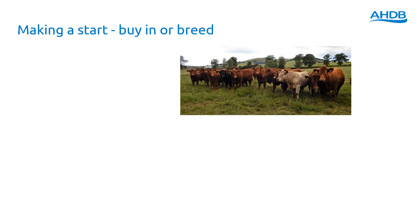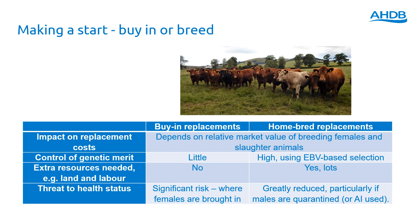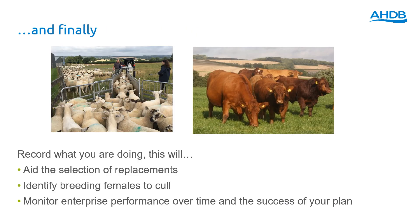We also need to think about whether to buy in or breed our own genetics. If you breed your own, you can control the genetics but it takes up a lot of resources in land and labour; however, there's the added advantage of greater control over the health status of animals within the enterprise. Finally, once your plan is in place, do some recording as you go along — this will aid selection of replacements, identify breeding females that aren't performing, and enable you to monitor the enterprise over time. Farm software linking to electronic ear tag identification can help with all of this.